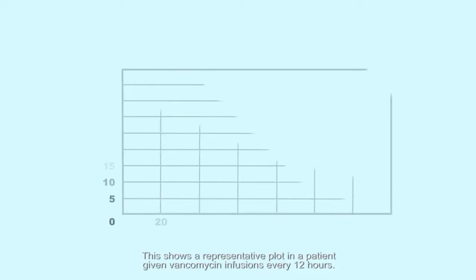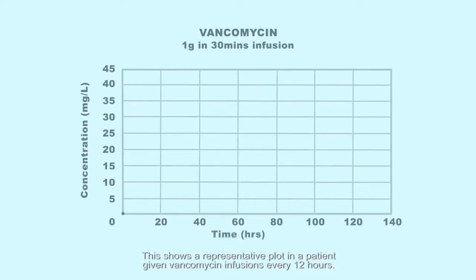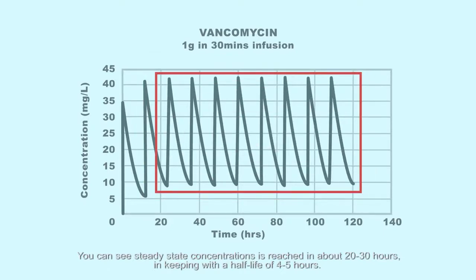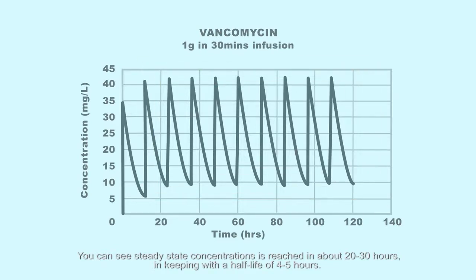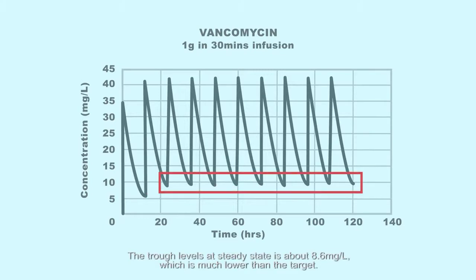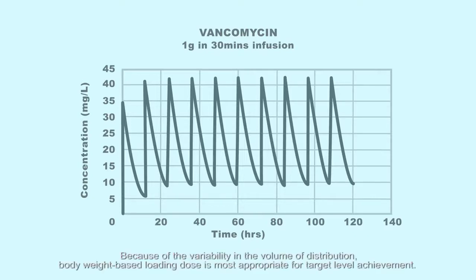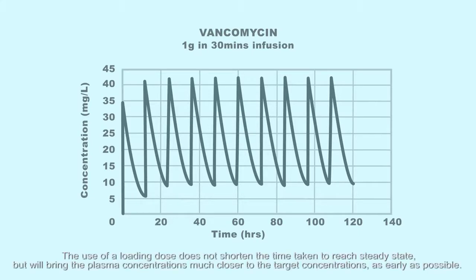A representative plot in a patient given vancomycin infusions every 12 hours shows that steady state concentrations are reached in about 20 to 30 hours, in keeping with a half-life of 4 to 5 hours. The trough levels at steady state are about 8.6 mg per litre, which is much lower than the target. In a serious infection, a loading dose will have to be administered. Because of the variability in the volume of distribution, a body weight-based loading dose is most appropriate for target level achievement. The use of a loading dose does not shorten the time taken to reach steady state, but will bring plasma concentrations much closer to target concentrations as early as possible.